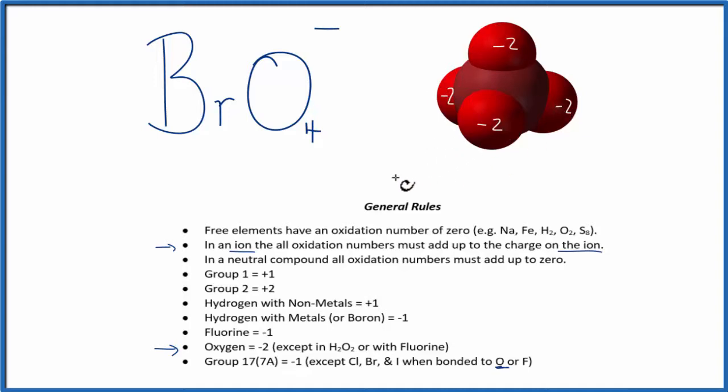we have 2, 4, 6, 8, minus 8, those are the oxidation numbers on the oxygen, we add those up, plus some number is going to equal this charge, this minus 1 here.